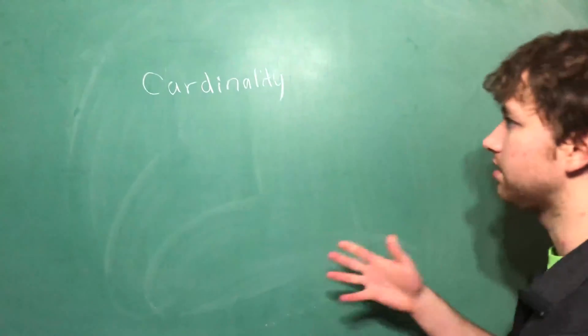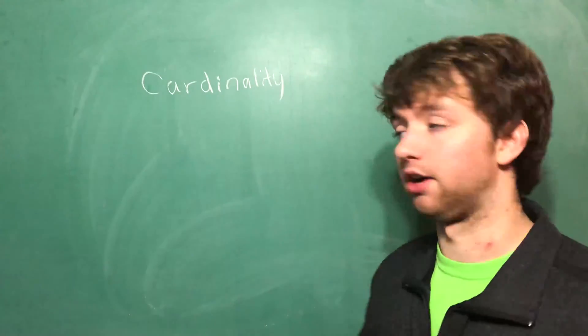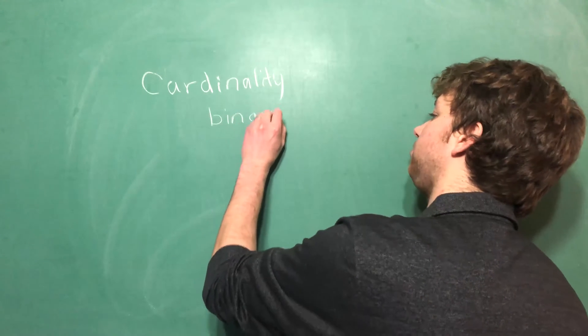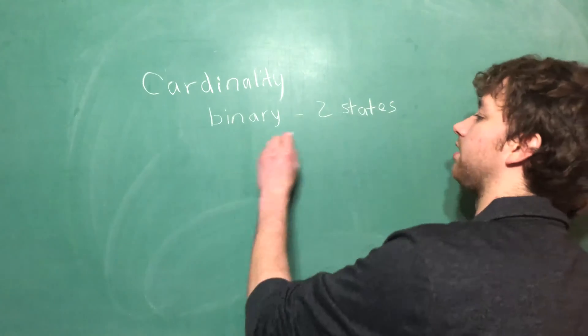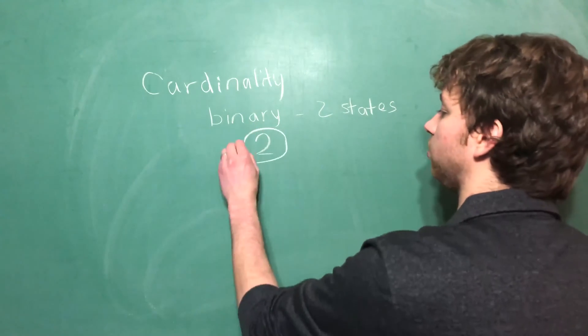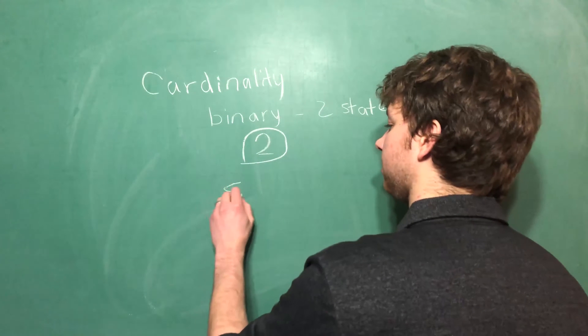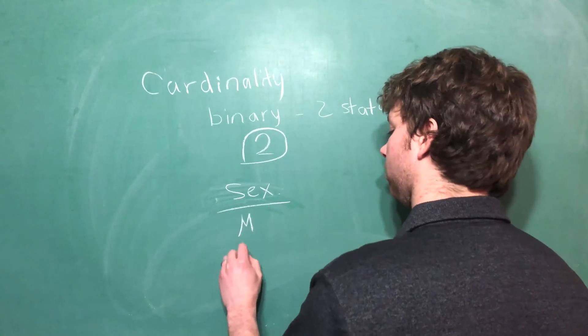So the easiest one to start with is something that is binary. If something is binary this means it's in two states. So the cardinality of this would be two. An example of this is sex. Sex could be male or female.